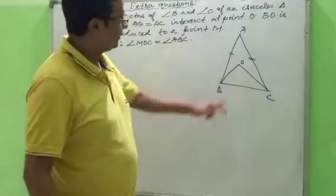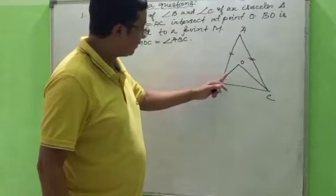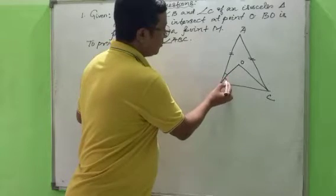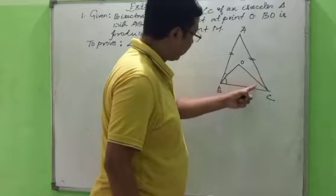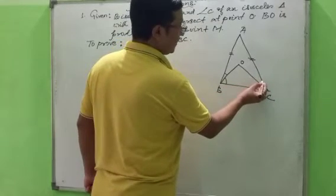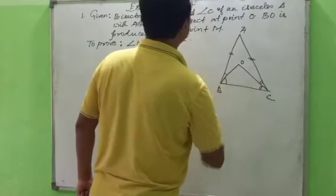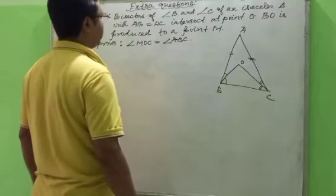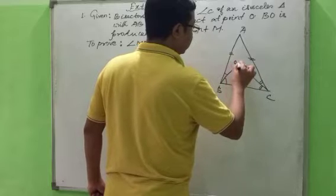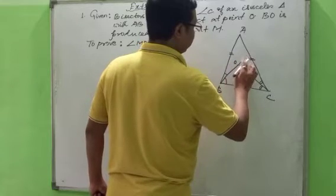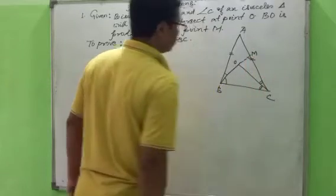The line segment OB divides angle B into two equal parts. These two measurements are equal. The line segment OC bisects angle C, so these two parts are also equal. They meet at point O. BO is produced, that means BO is extended to point M.